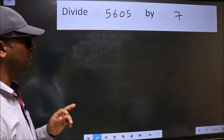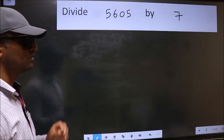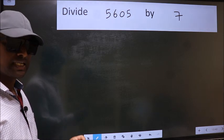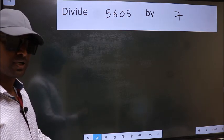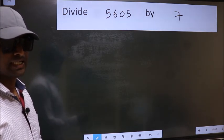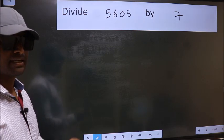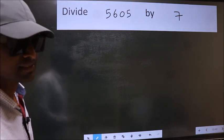Divide 5605 by 7. While doing this division, many do this mistake. What is the mistake that they do? I will let you know. But before that, we should frame it in this way.